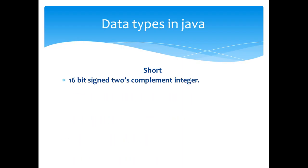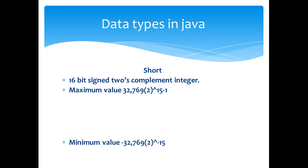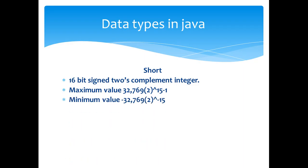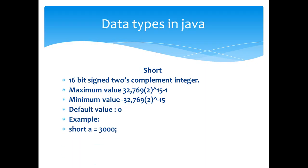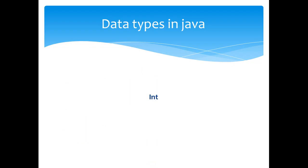The second type is the short type. It is a 16-bit signed two's complement integer. The maximum value is 32,767, which is 2 raised to 15 minus 1. The minimum value is minus 32,768, which is 2 raised to minus 15. The default value is 0. Example: short a is equal to 3000, short b is equal to 2000.